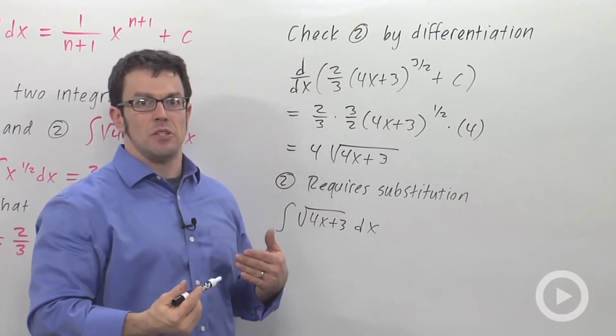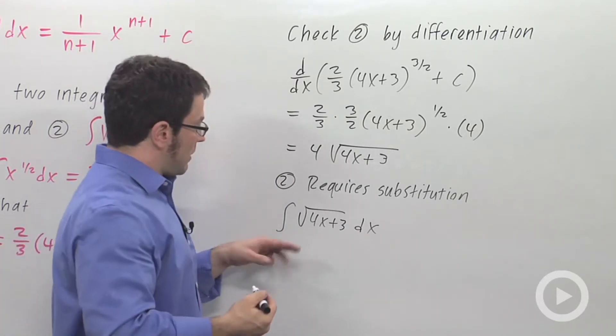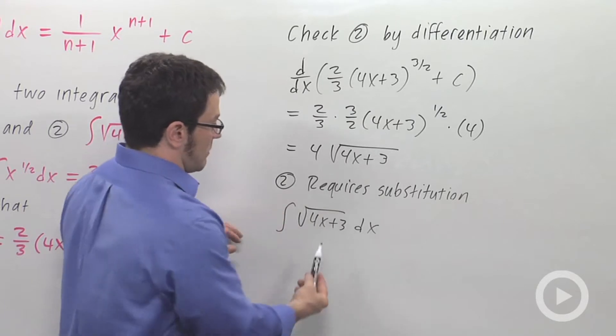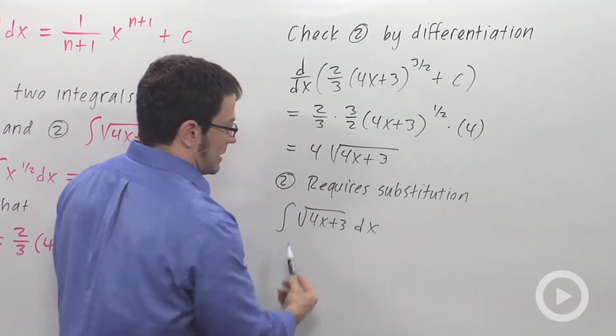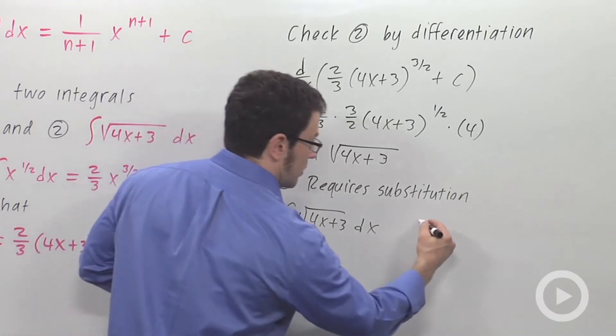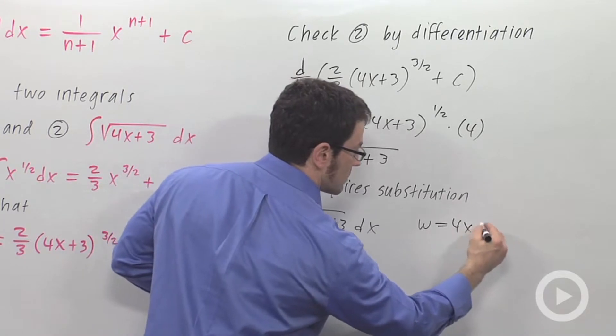Remember, when I use the method of substitution, I look for a composite function. And this is a composite function. I want to substitute for the inside part, so w equals 4x plus 3.